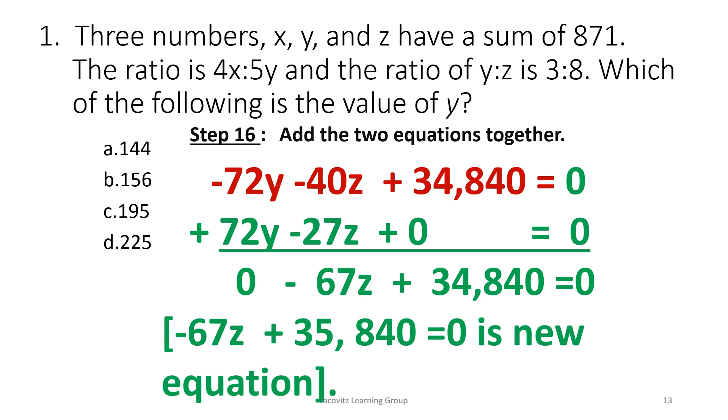So can we solve now? Well, hopefully that's a mess. What's going on is now you can eliminate the y variable here. They're canceling out. You have 34,840 plus 0 is 0. But guess what? Negative 40 plus negative 27z is negative 67z. So now you can solve. Okay? For the equation.